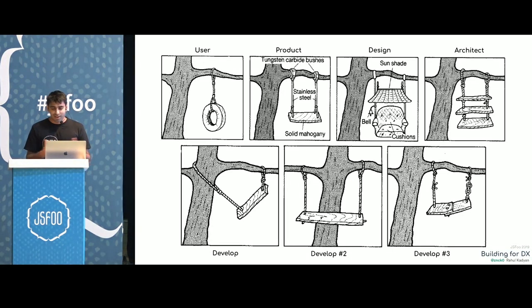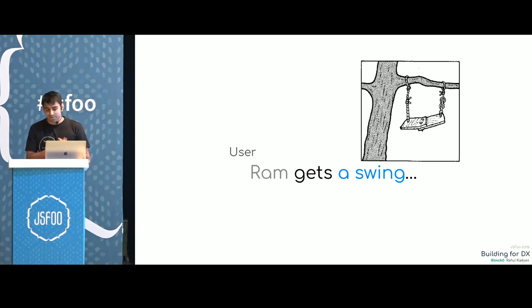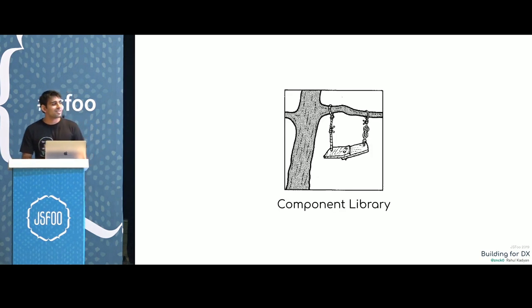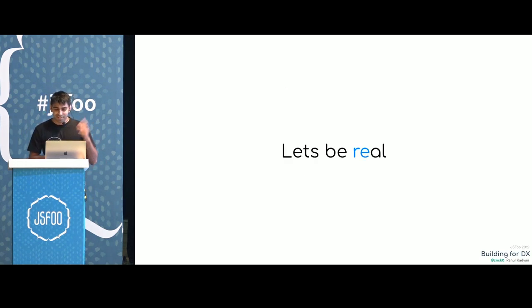Eventually the user gets a swing — it's not perfect, but it's very close to that. This was our component library in 2018. Let's get real with actual examples — everything so far was hypothetical.